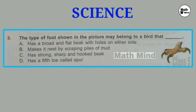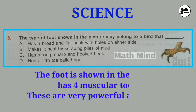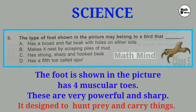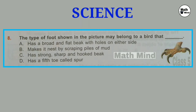Question number 8: The type of foot shown in the picture may belong to a bird that does what? The foot shown in the picture has four muscular toes. These are sharp and very powerful, most likely designed to hunt prey and carry things. It is a talon — foot of a flesh-eating bird like an eagle. Clearly they have strong, sharp and hooked beak. So option C is correct.